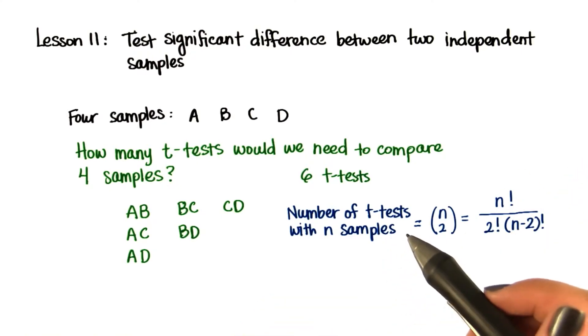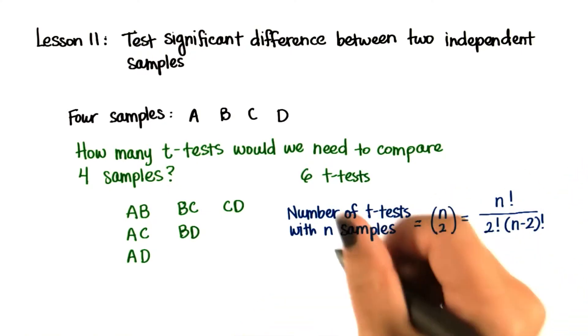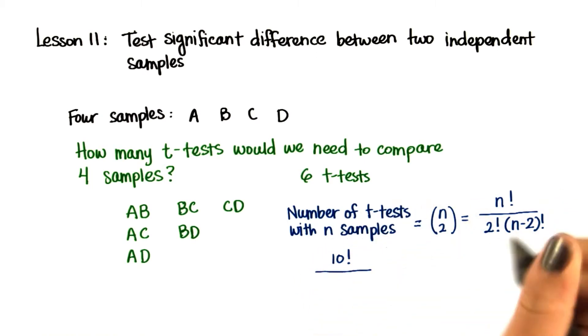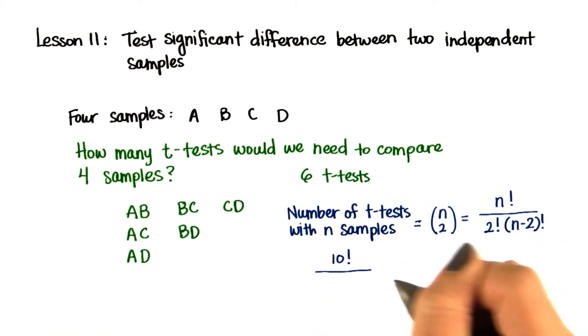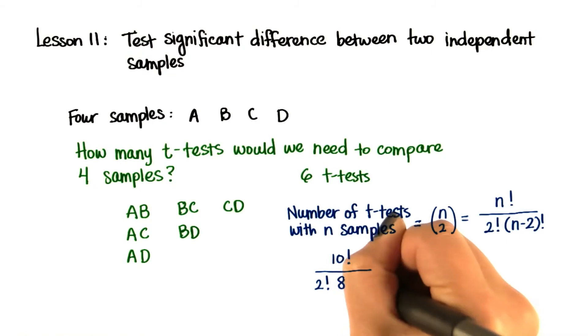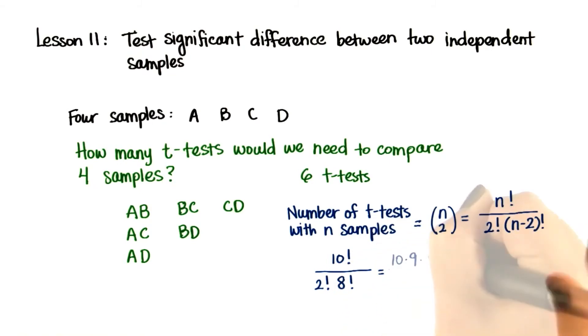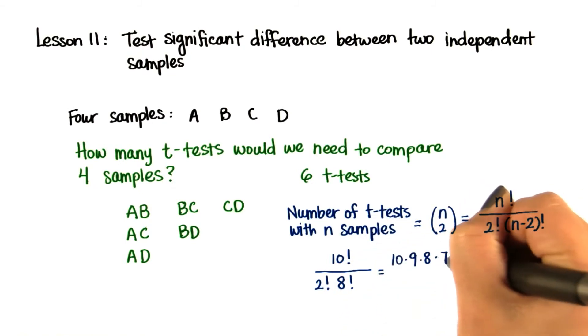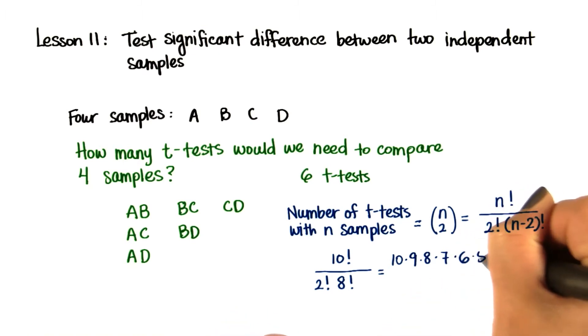So for example, if we want to compare 10 samples, the number of t-tests we would do is 10 factorial divided by 2 factorial times 8 factorial. Remember that factorial means 10 times 9 times 8 times 7, etc., all the way to 1.